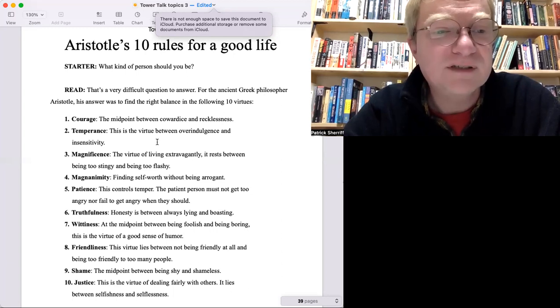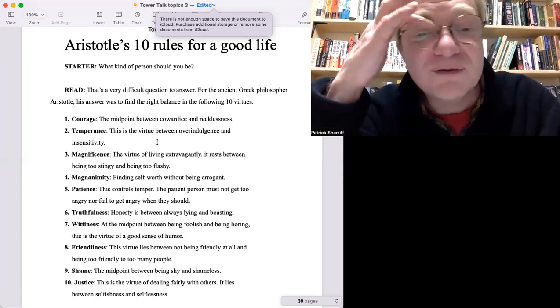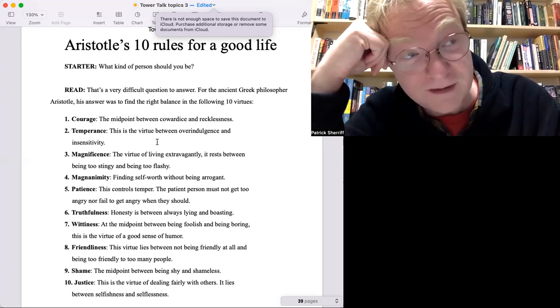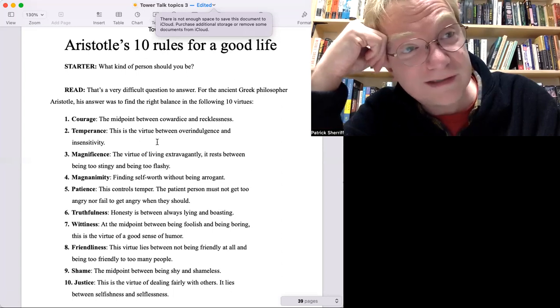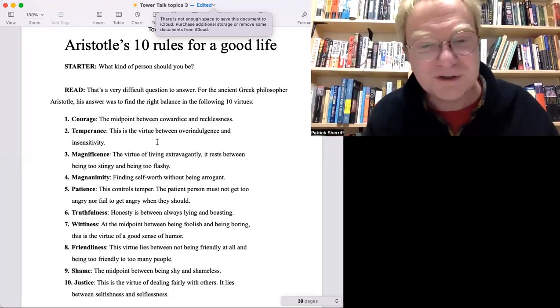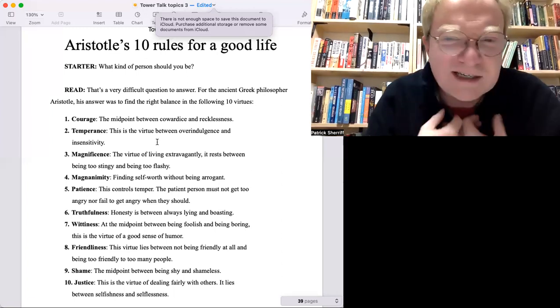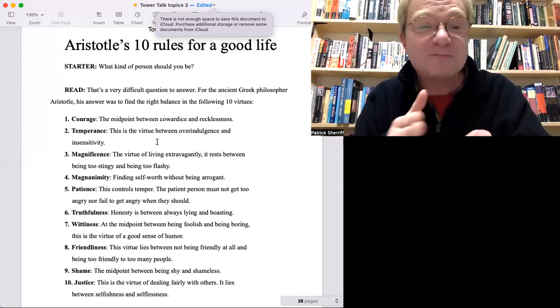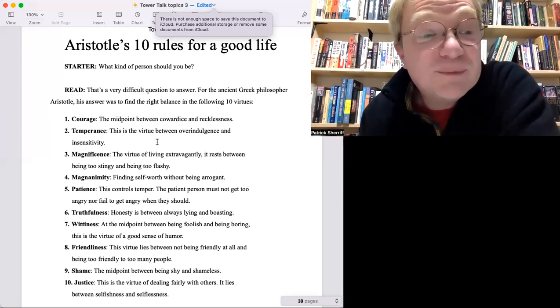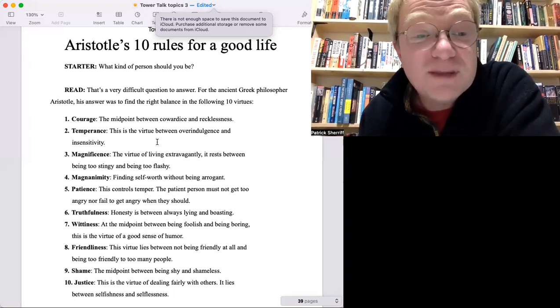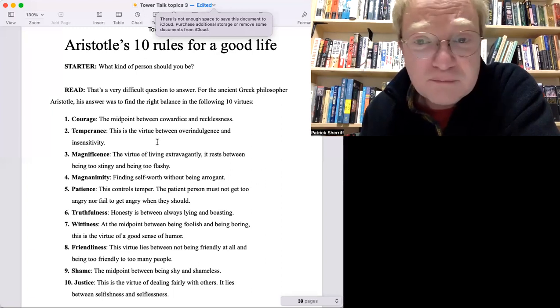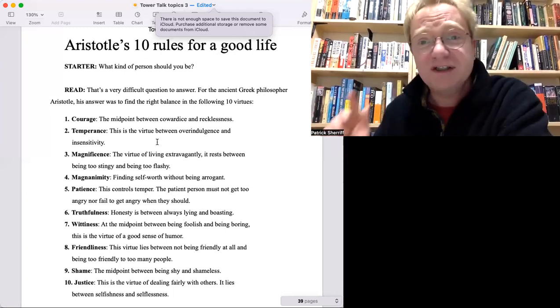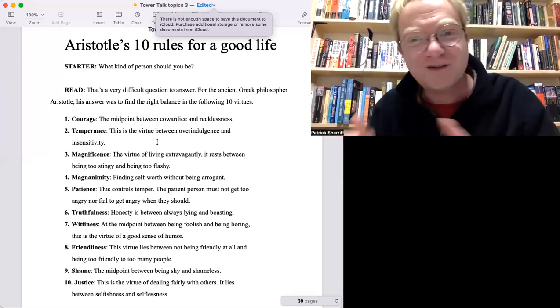Number four: magnanimity. Magnanimity, is that right? Finding self-worth without being arrogant. So arrogant is loving yourself too much, but the opposite is not, is hating yourself. Well, you shouldn't hate yourself, but don't love yourself. Be somewhere in the middle again. Patience, number five: controlling temper. You should be patient, but sometimes you have to be angry. If somebody's stealing your money, don't be patient, fight back. So there's a middle ground, right?